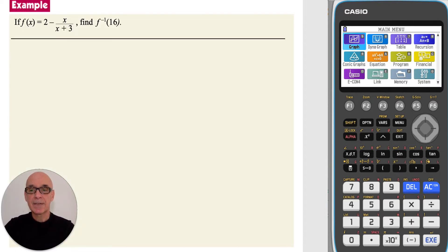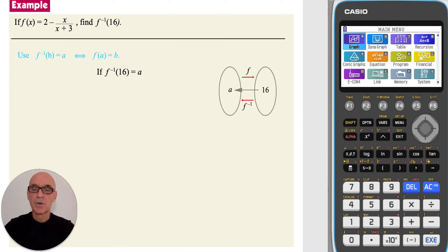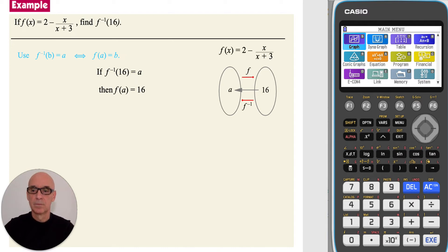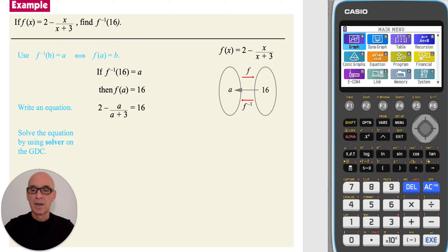In this question, given f of x, we are asked to find inverse f of 16. To do this, we need to reverse the statement. So if inverse f of 16 is equal to a, then f of a must equal 16, as can be seen in the mapping diagram. We write an equation equating f of a to 16. Then we can solve the equation using solver on the calculator.